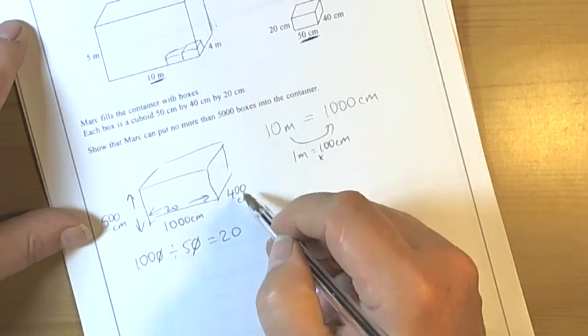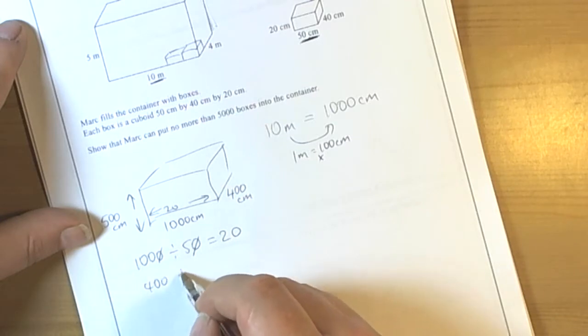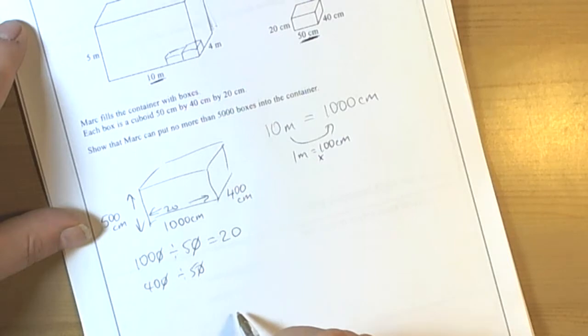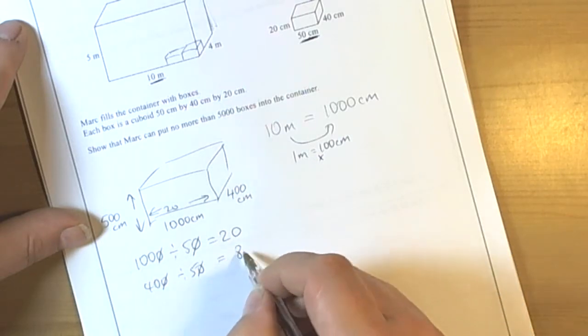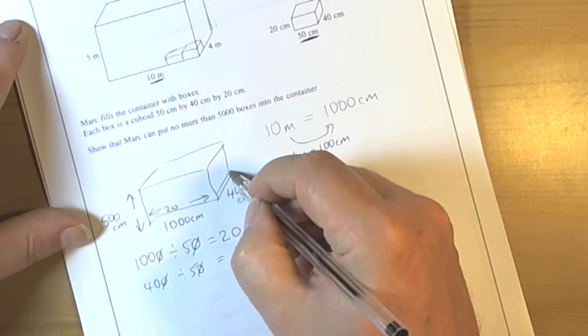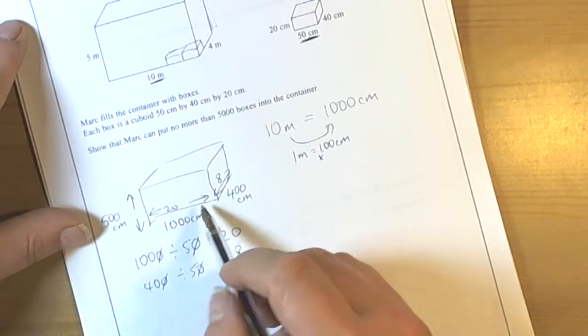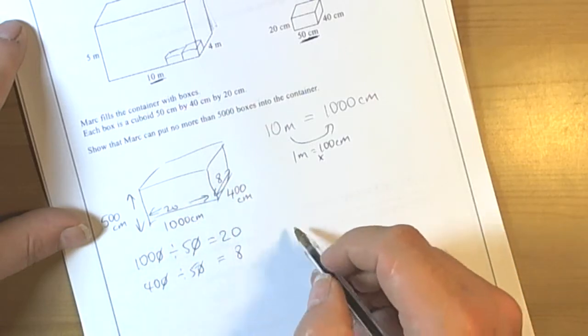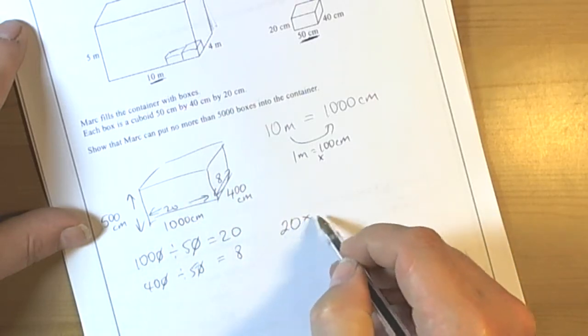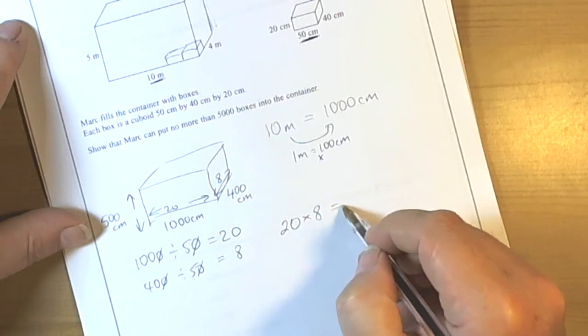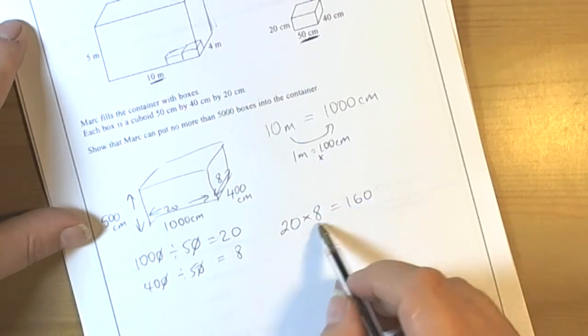If we look at the four hundred dimension, then four hundred divided by fifty. Again divide both by ten to make an easier sum, so forty divided by five is eight. So this way we can fit eight boxes. That tells us on the bottom layer we could fit twenty times eight boxes, so we could fit a hundred and sixty boxes along the bottom layer.